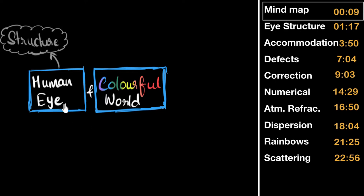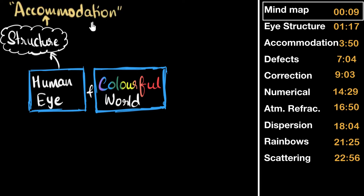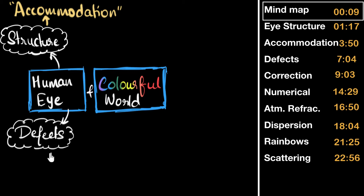In the human eye section, we first study the structure of the eye, learning about the different parts and their functions. One major function is accommodation — a very frequently asked question, which is why I'm highlighting it. The second major topic is learning about the different defects and how to correct them. This is where you can expect the numericals to come from.